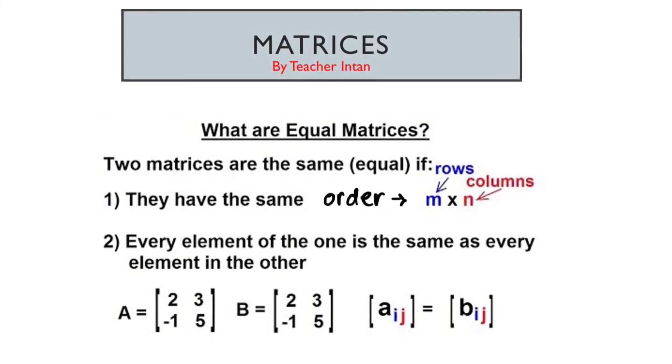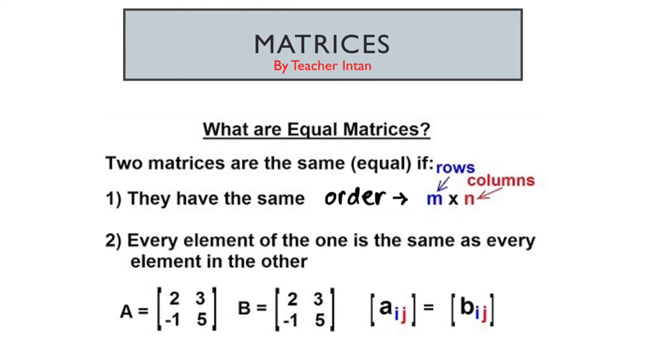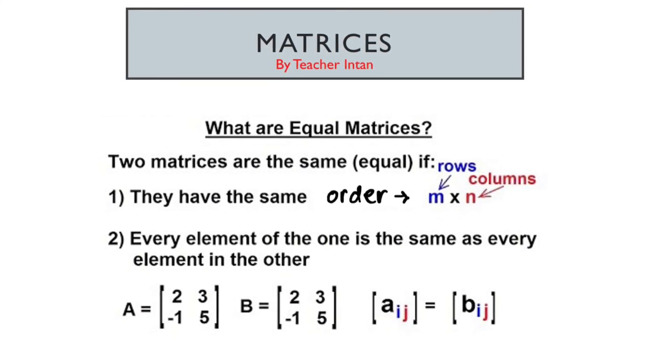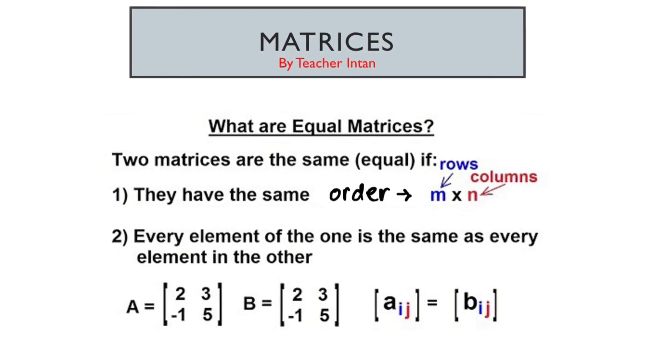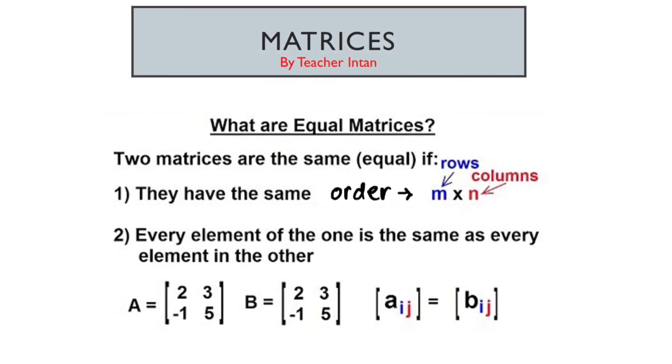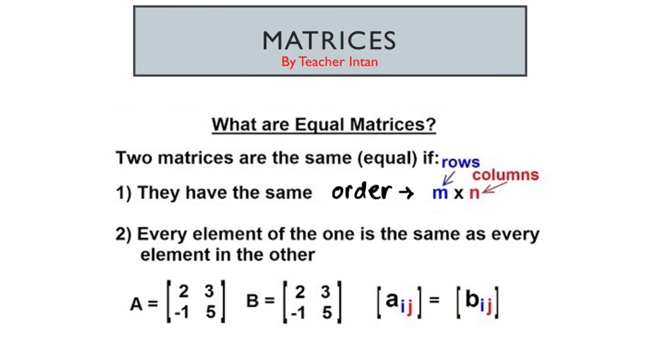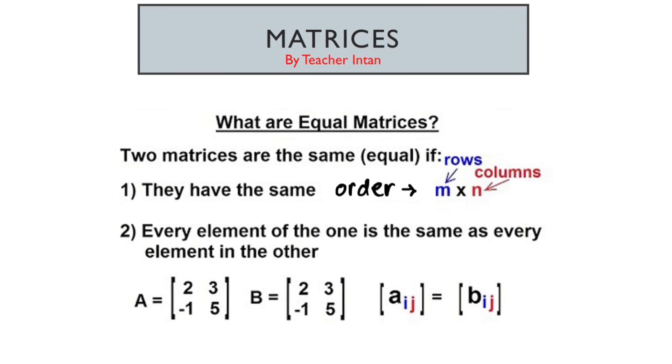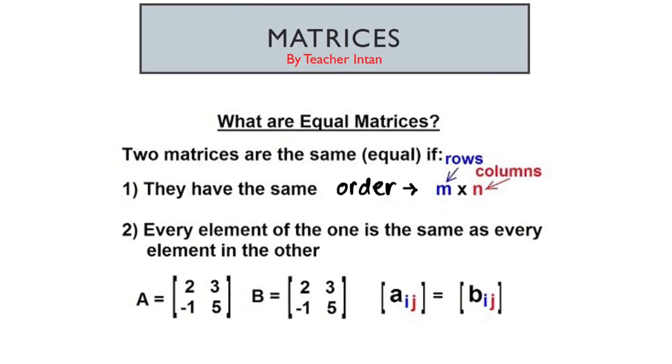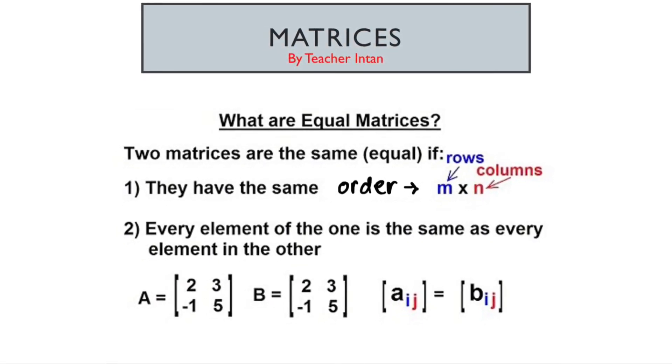The next one is, every element in the matrix is the same. Let's look at the example below. So, we have matrix A and matrix B. Matrix A is in the order of 2 times 2. Same goes to matrix B. You can also see that every element in A and B are the same. So, we can say that element A equal to element B. They are equal matrices.